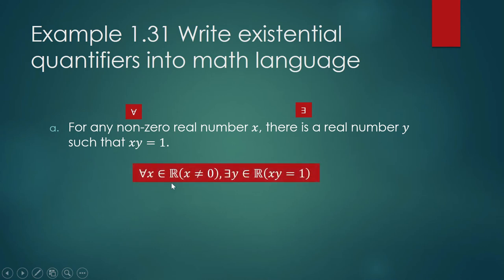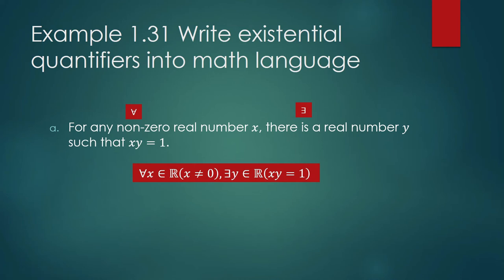So we write: for all real numbers x that are not equal to zero, there is another real number y such that x times y is equal to 1. Again, we are not concerned with the truth value of the statement — a statement can be false or true — but our concern is to write English sentences into math sentences.